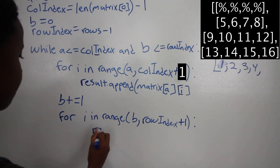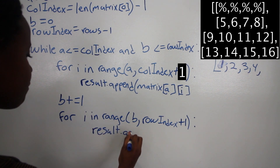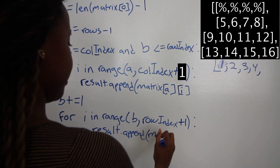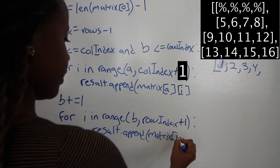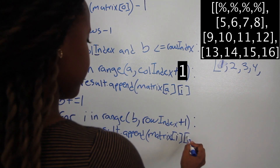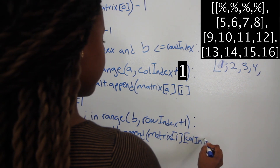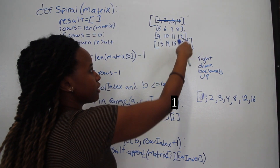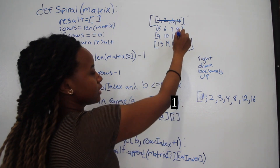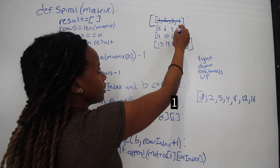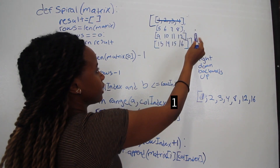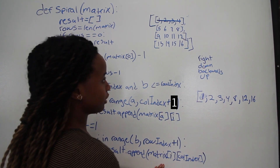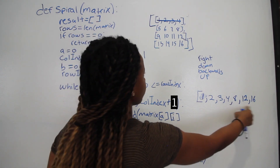We append to results: result.append(matrix[i][col_index]). We're grabbing the last elements of the arrays — currently A, 8, 12, and 16. Those are all the last elements, all at index three. So we have matrix[1][3], matrix[2][3], matrix[3][3] — grabbing A, 12, and 16.